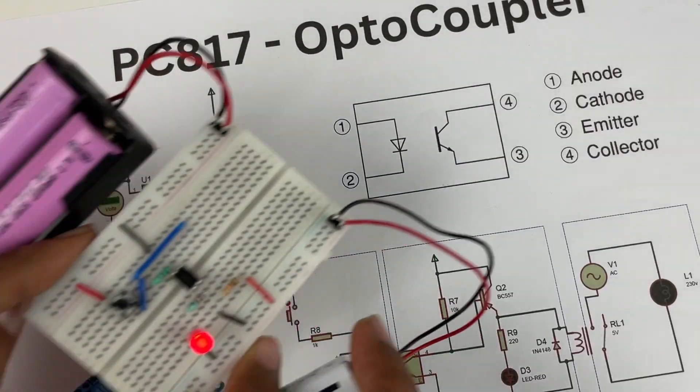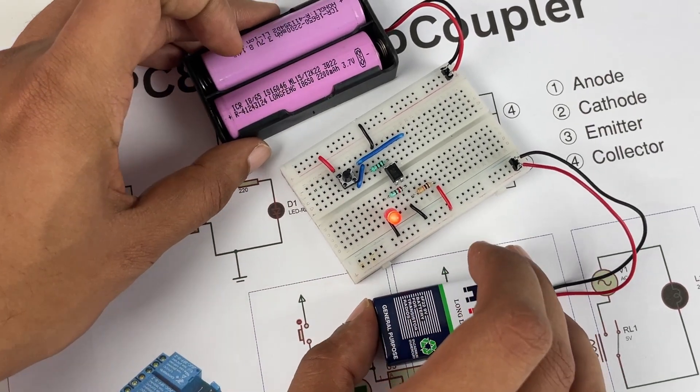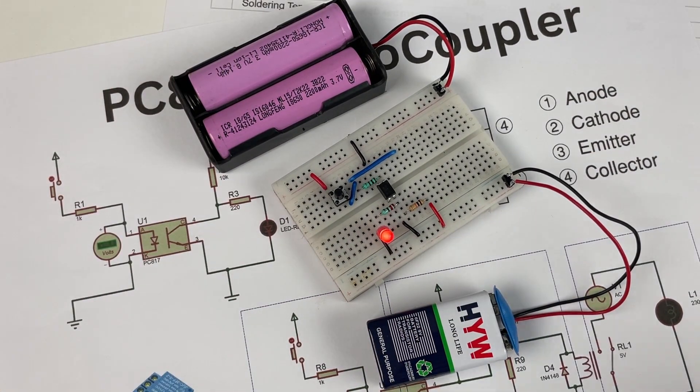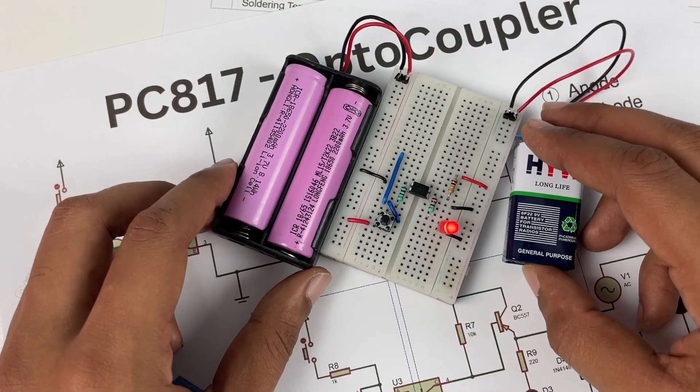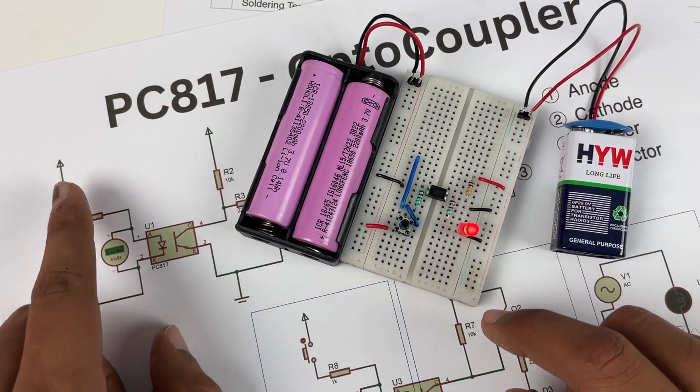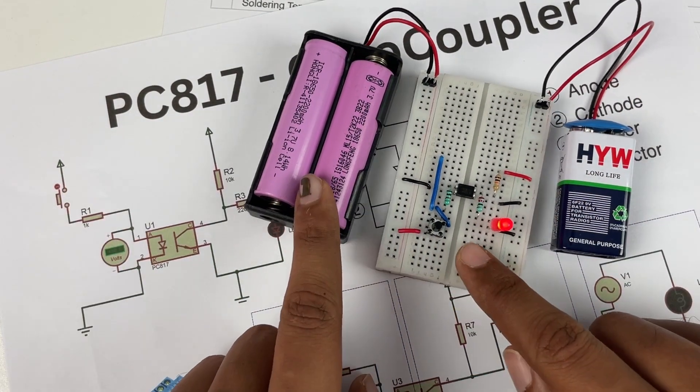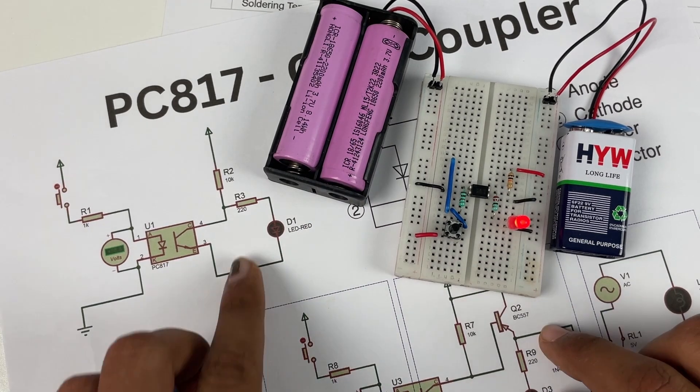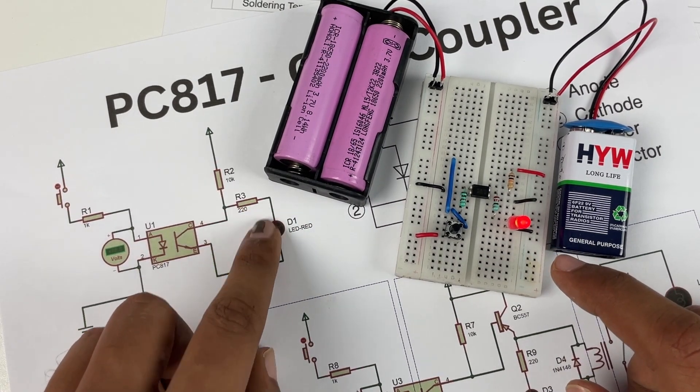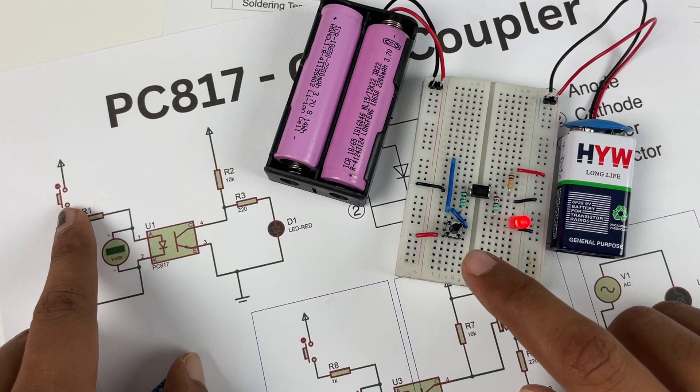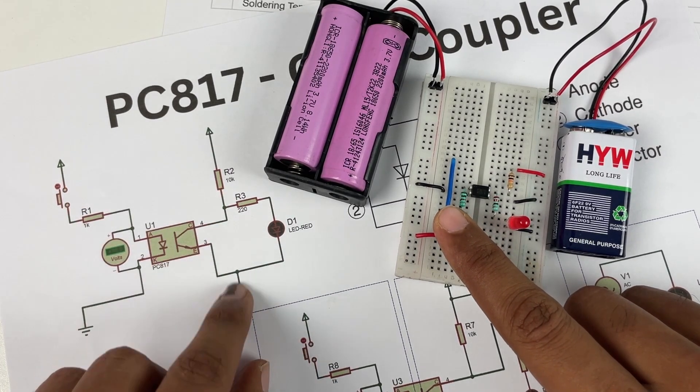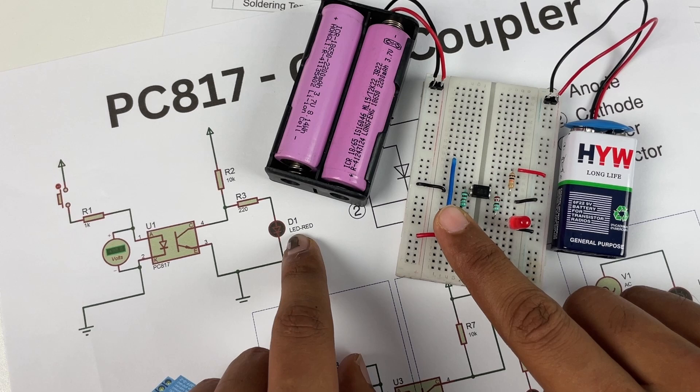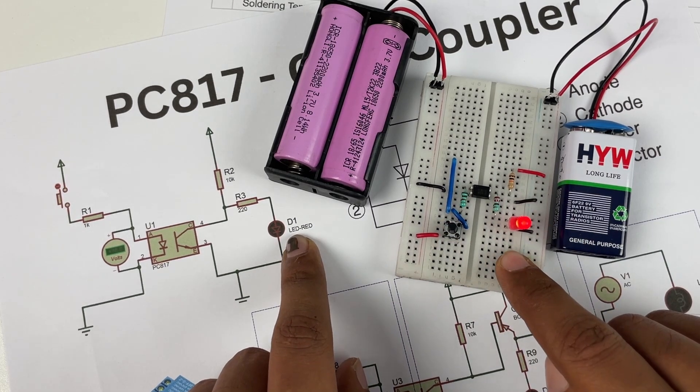We have also built this same circuit on a breadboard for demonstration and as you can see we have two different power sources. Let's consider this as the input power source and this as the output power source. Now similarly we have an LED here which turns on from the power source directly and whenever I press this button you can see that the current chooses the least resistance path and thus the LED is turned off. When I release it it turns back on.